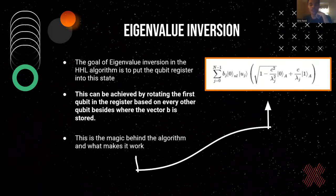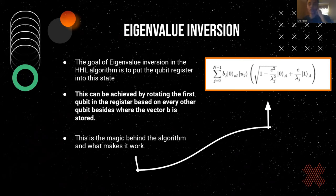Eigenvalue inversion. This is the magic and what makes the HHL algorithm work. The goal is to put the qubit register into the state seen to the right. This seems hard, but this can be achieved by rotating the first qubit in the register about the y-axis based on the eigenvalues that was previously encoded into the qubit registers by the QPE.